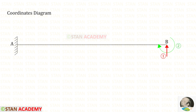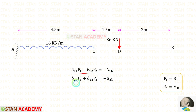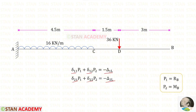Now let us draw the coordinates diagram. Let us keep Rb as the first coordinate and the moment Mb as the second coordinate. We know these two equations to find Rb and Mb. To find the displacements delta 11, delta 12, delta 21, delta 22, delta 1L and delta 2L, we have to find the moments M, M1 and M2. Using the given loads we have to find the moment M.